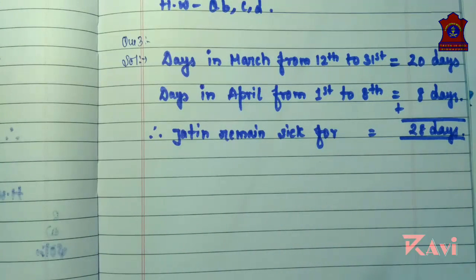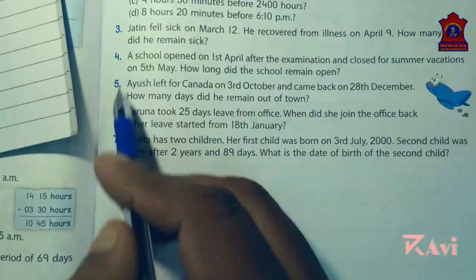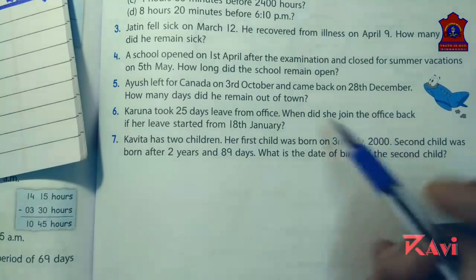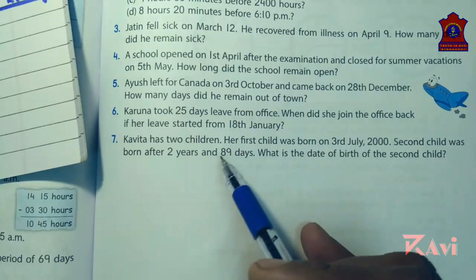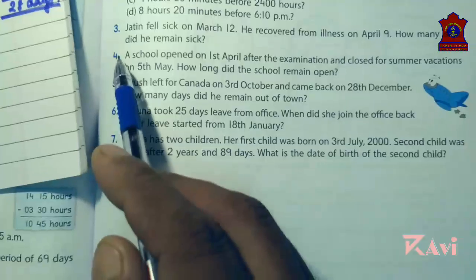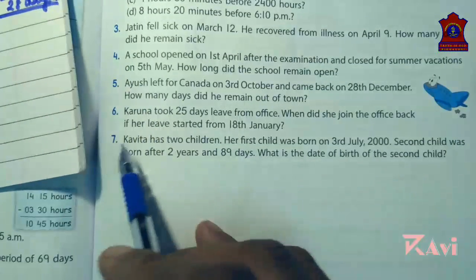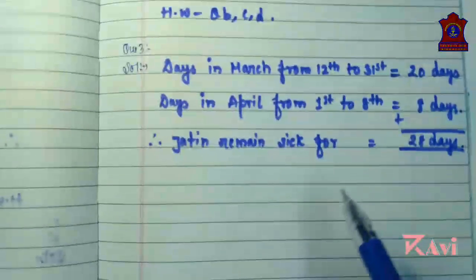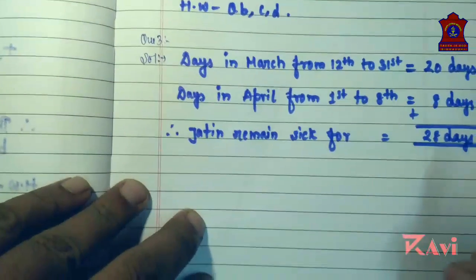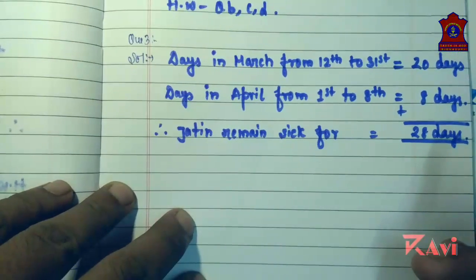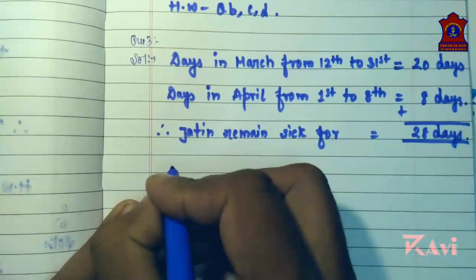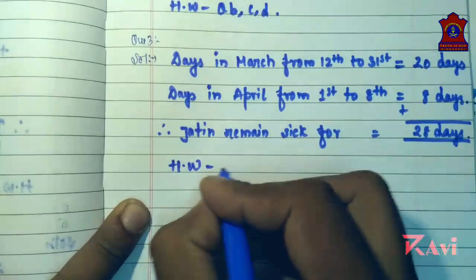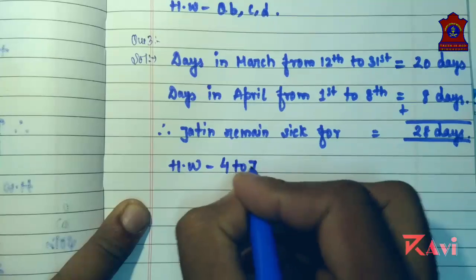The rest of the questions — number 4, 5, 6, and 7 — are similar, and you must have done similar questions in the previous exercises. Try doing these questions by yourself. We will discuss any doubts in our final online class. Homework: questions 4 to 7.